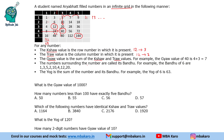The numbers surrounding a number are called its Bandhu, meaning neighbors. For example, the Bandhu of 6 are 1, 3, 5, 2, 10, 4, 12, and 20. The Yoke is the sum of the number and all its Bandhu. So when we add all these numbers — 6 plus its neighbors — we get: 7 plus 21 plus 25 equals 63. That is how we calculate the Yoke. Now let us answer the questions.